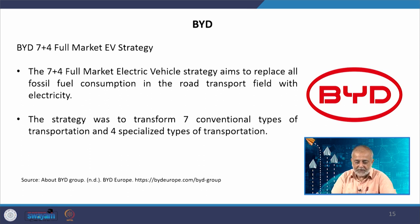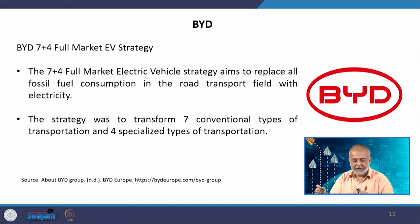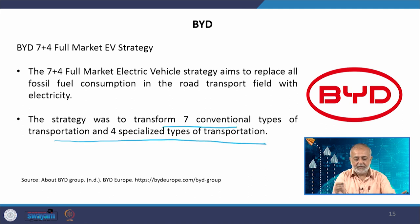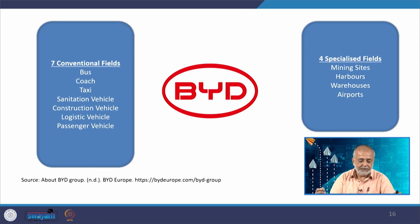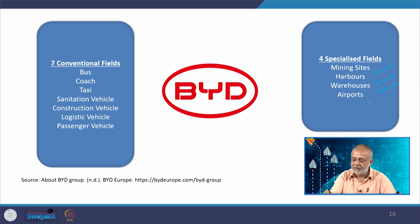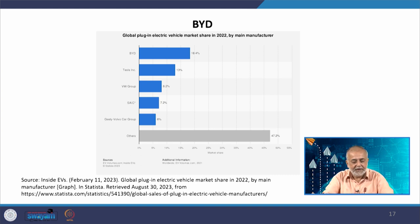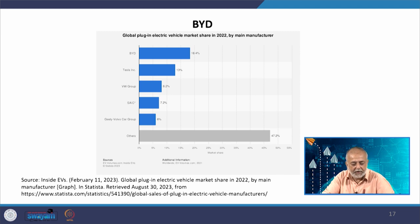The '7 plus 4' full-market electric vehicle strategy aims to replace all fossil fuel consumption in road transport with electricity — transforming 7 conventional types and 4 specialized types of transportation. The 7 conventional fields are: buses, coaches, taxis, sanitation vehicles, construction vehicles, logistic vehicles, and passenger vehicles; the 4 specialized are: mining sites, harbors, warehouses, and airports. In terms of global plug-in electric vehicle market share in 2022 by main manufacturer, BYD holds 18.4 percent — way ahead of Tesla's 13 percent.